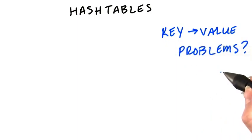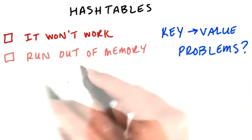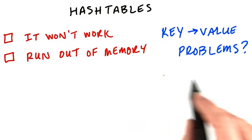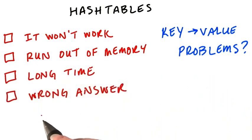What problems do you see with this approach? Say if you were running it on one terabyte of data. Do you think that it flat out won't work? Or could you run out of memory having to store this hash table? Could it take an excessively long time? Or will we not get the right answer?